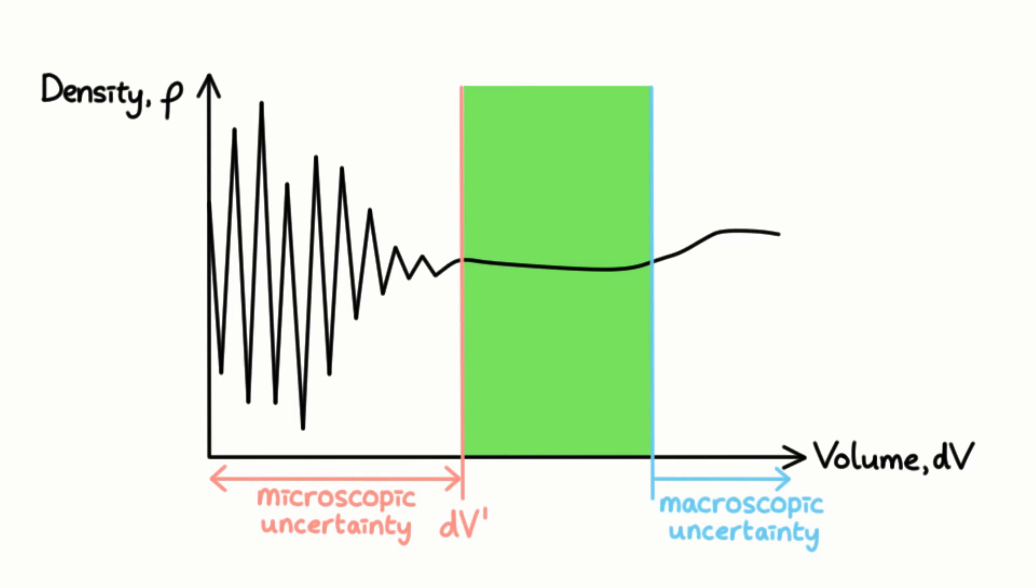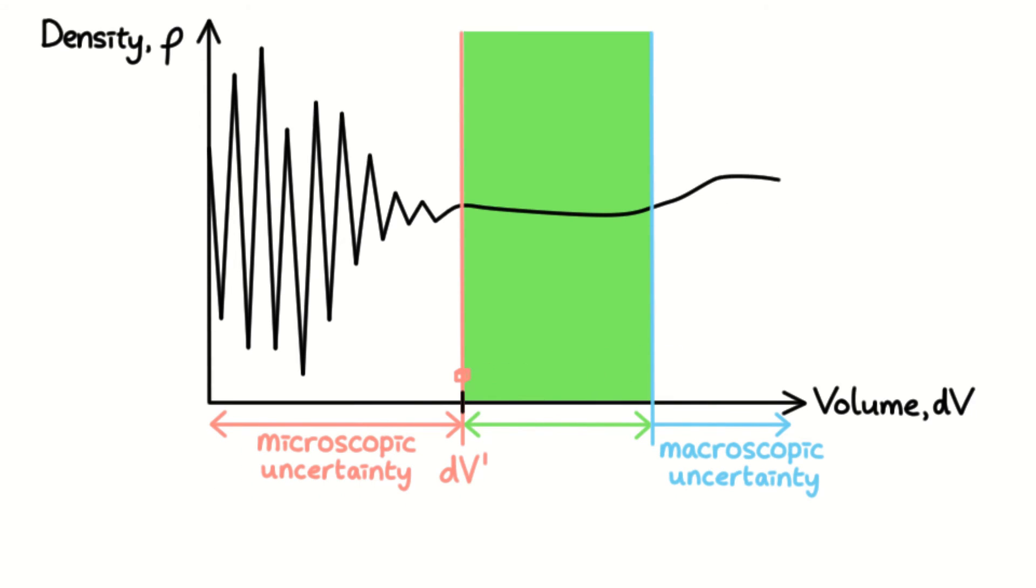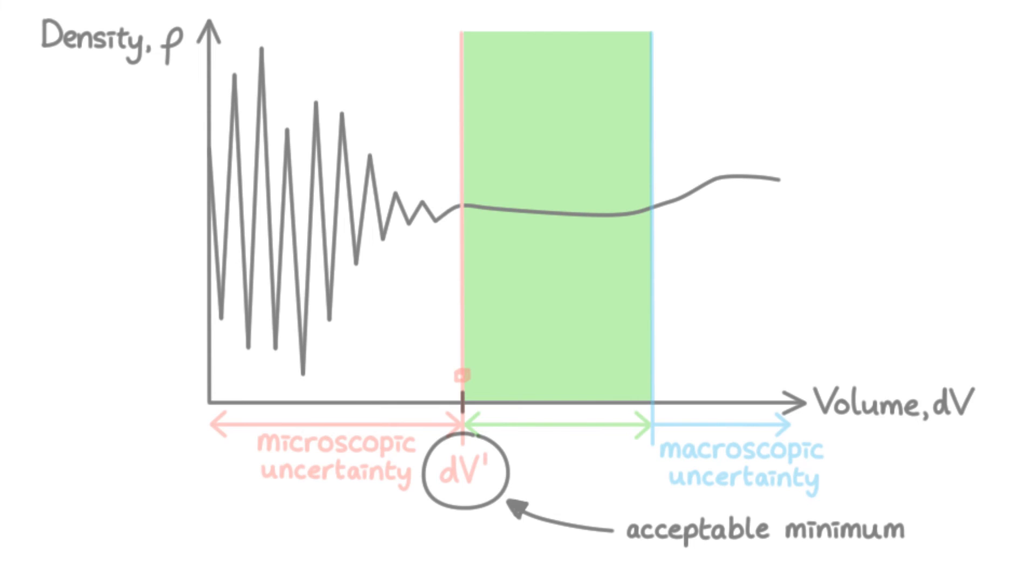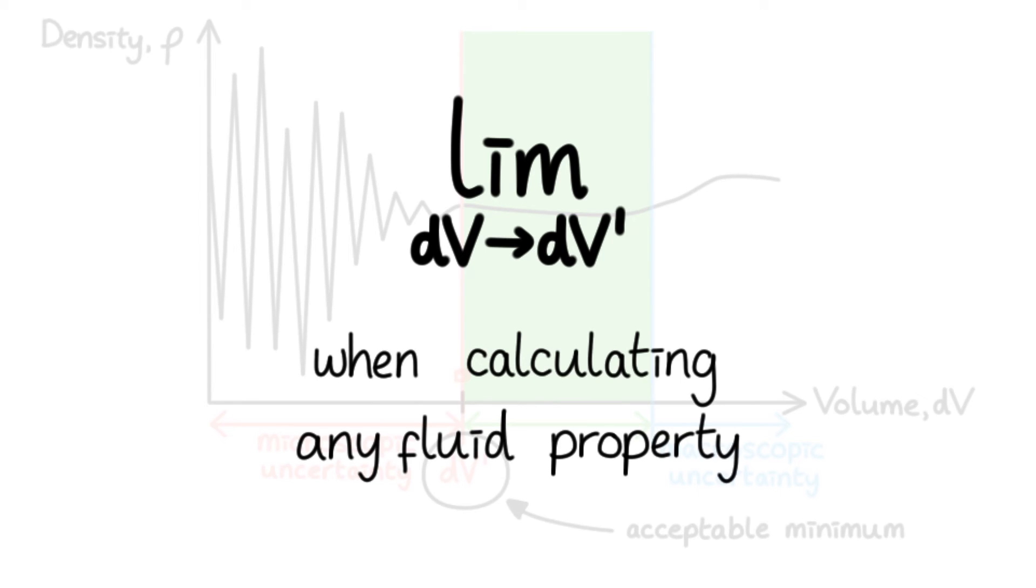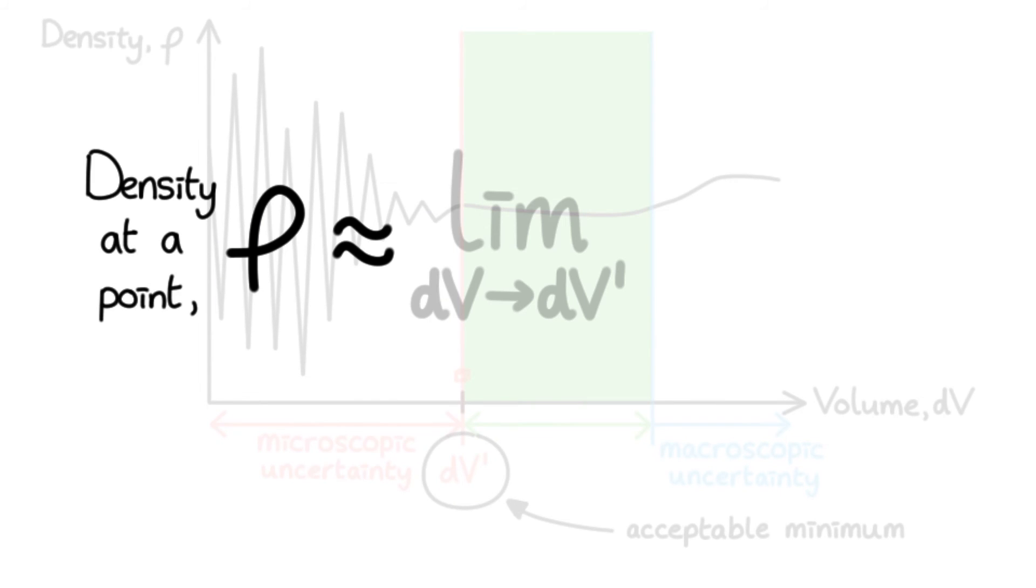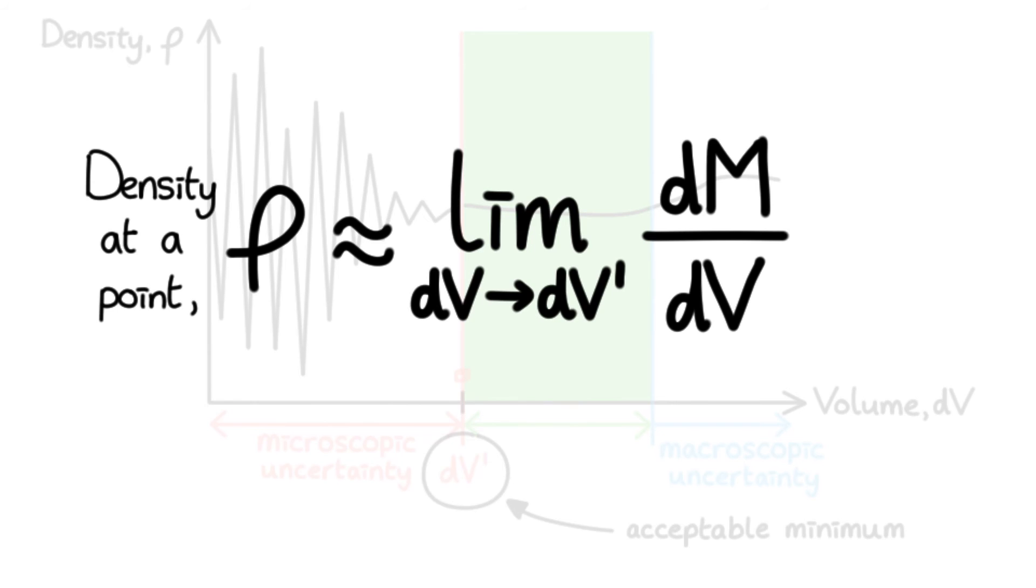The regions of microscopic and macroscopic uncertainty leave this somewhat acceptable green zone of dV for your volume in assessing density. As we've already established an acceptable minimum of dV prime for dV, we can make dV prime a target as we reduce dV. Mathematically, we write this as taking the limit of the volume as dV prime when calculating any fluid property. So the density, rho, at any point is best defined as dM over dV, as dV tends towards dV prime.